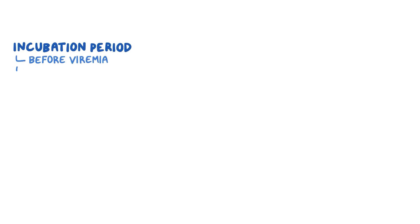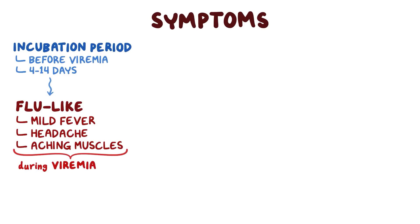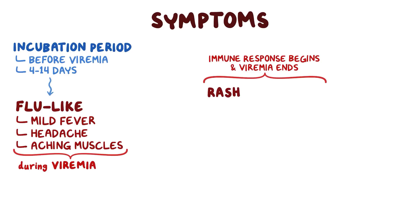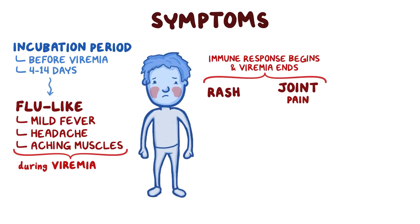The incubation period for parvovirus B19, basically the period before viremia starts, is between 4 and 14 days, after which symptoms develop. Flu-like symptoms, like a mild fever, headache, and aching muscles, are most common during viremia. Once the immune response begins and the viremia ends, these symptoms go away, and some individuals will then develop a rash and/or joint pain. The rash appears as uniform redness of the cheeks, but not the area around the mouth, giving the classic 5th disease slapped-cheek appearance. A lace-like rash might also appear on the trunk and limbs.